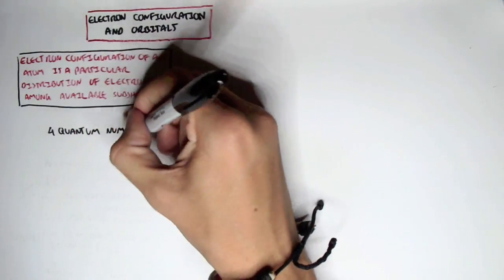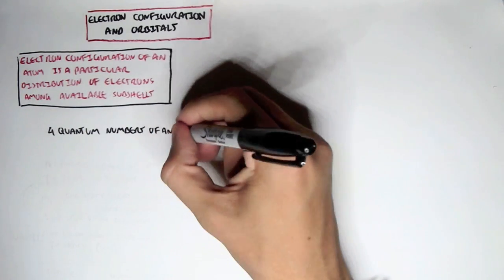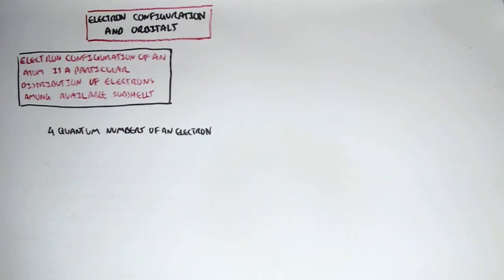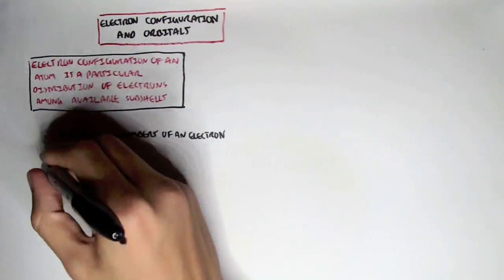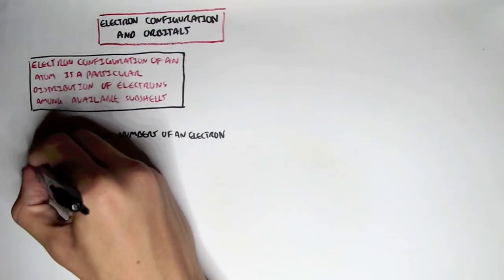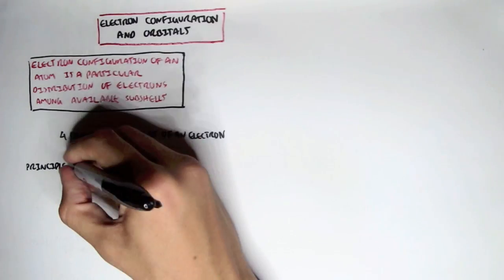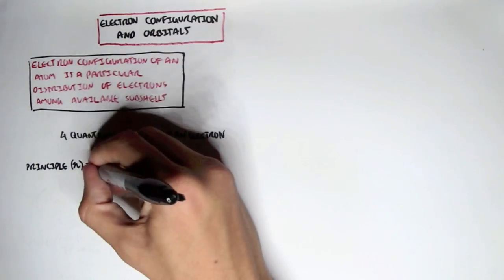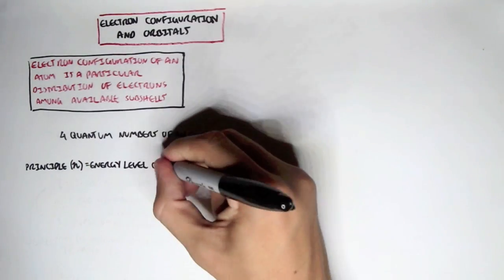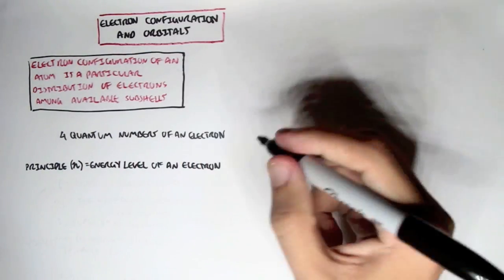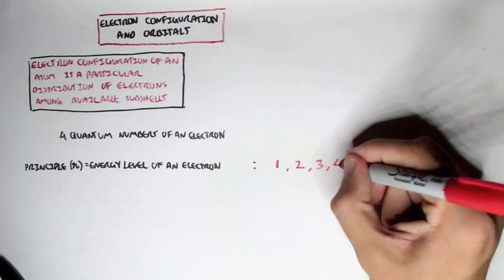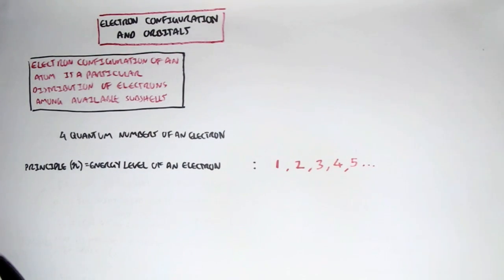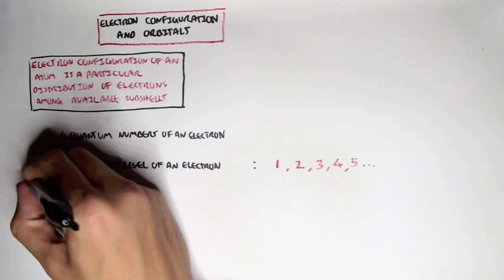To understand electron configuration, we have to recap what we learned about orbitals in the previous video. We have 4 quantum numbers of an electron. One of them is the principal quantum number, n, which is the energy level of the electron. It usually goes up in one digit: 1, 2, 3, 4, 5.